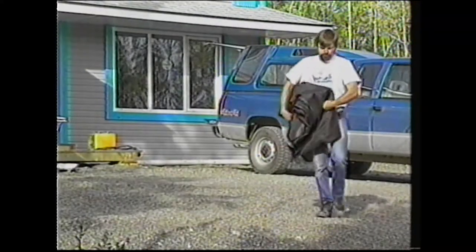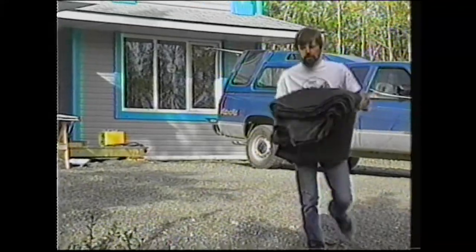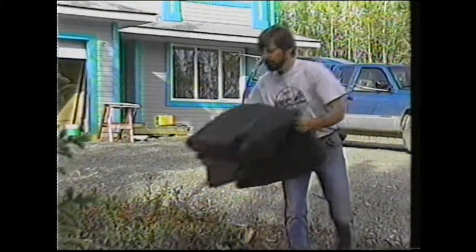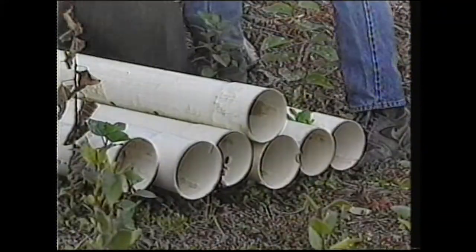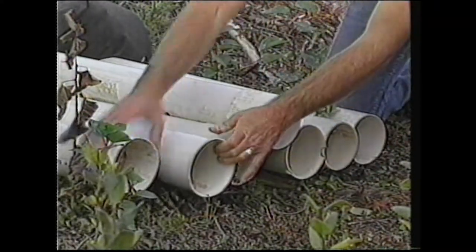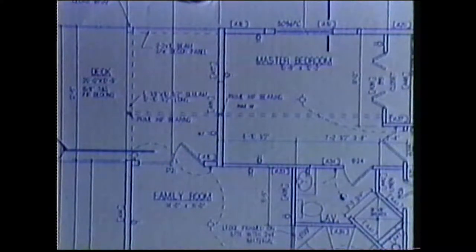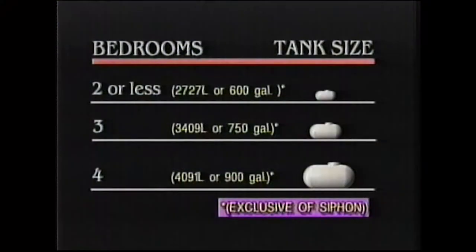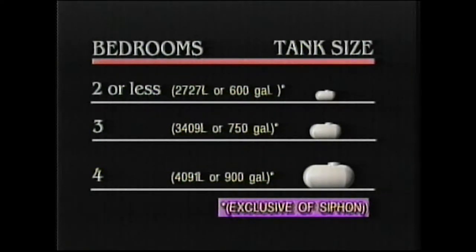You don't need to know the specifics of the microbiology to appreciate how this works. What is important is that by understanding how a septic system works, you'll have a better idea what to look for if things go wrong. The size of your tank is determined according to the estimated number of bedrooms in your house. This chart shows tank size to bedroom ratio. The sizes suggested are based on peak loads. The tank size does not include airspace or the siphon chamber.